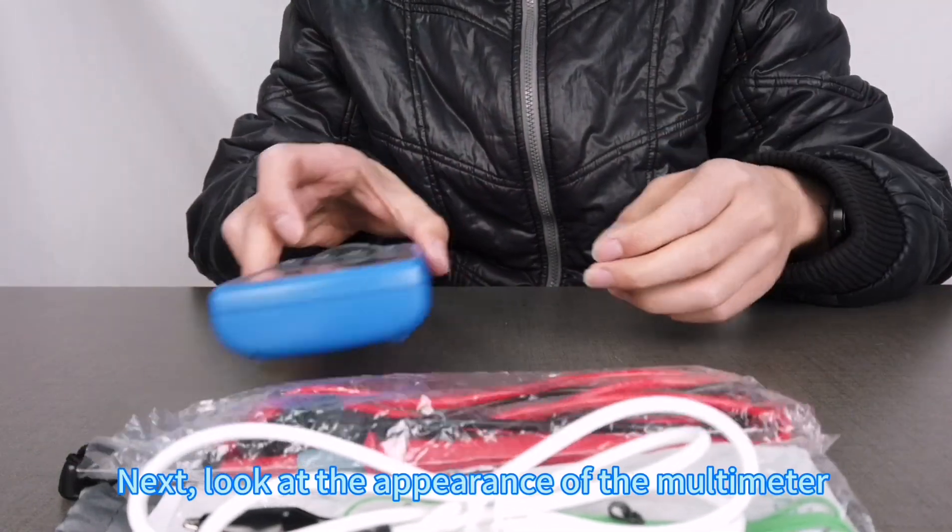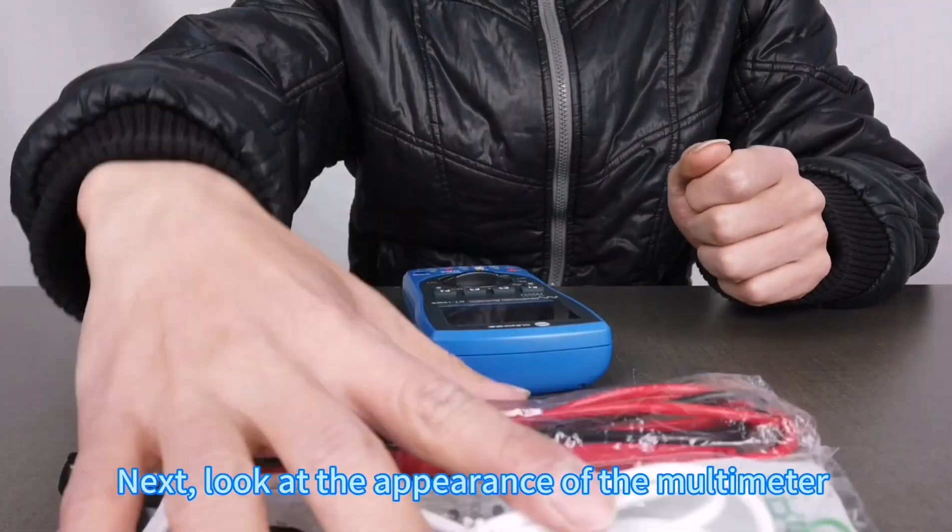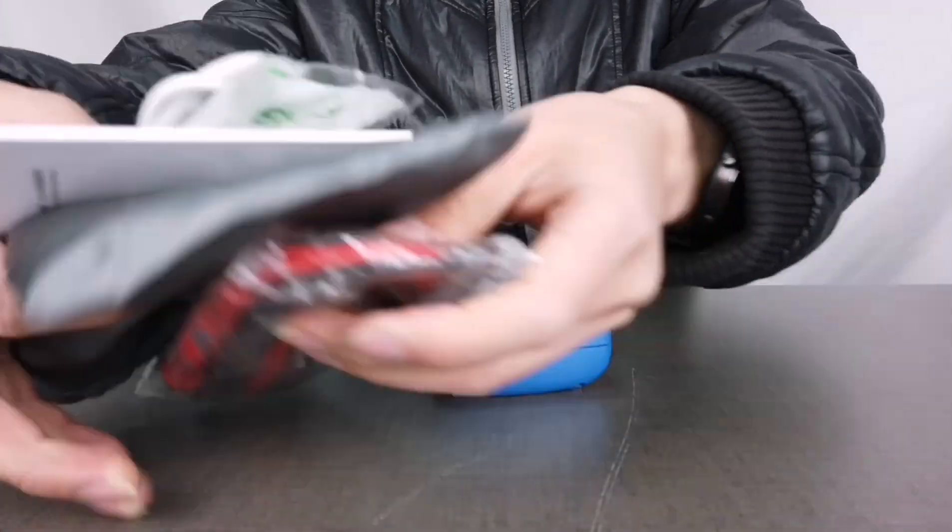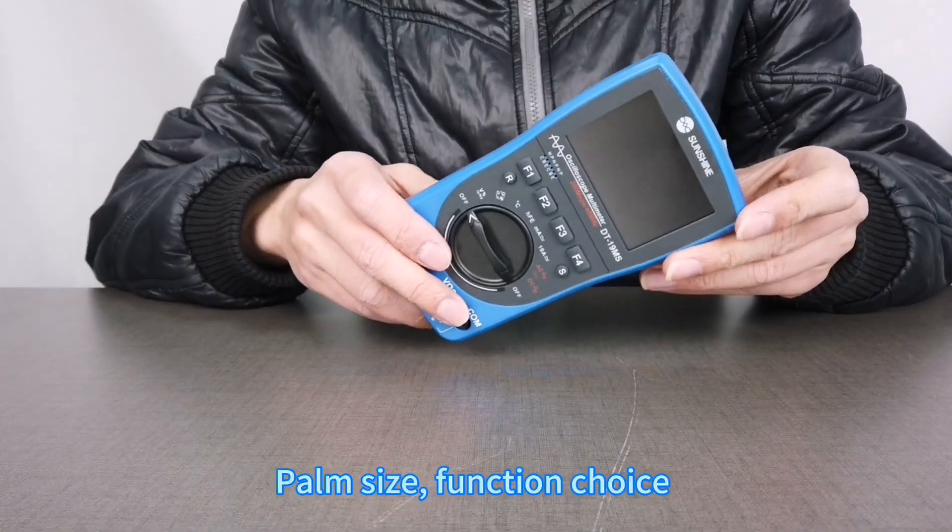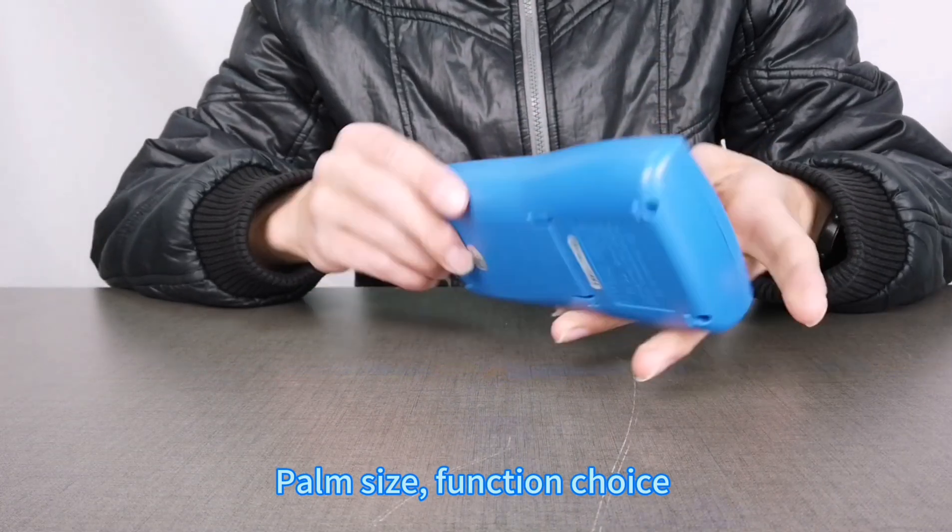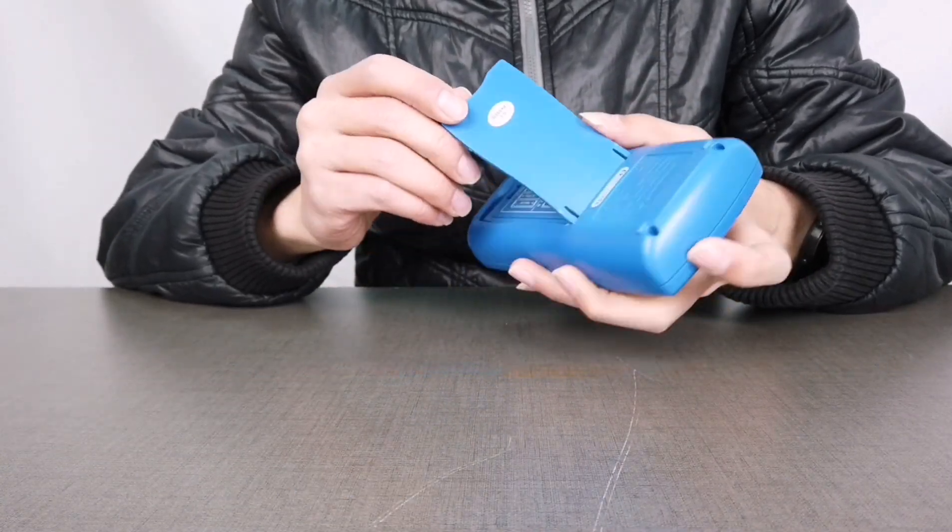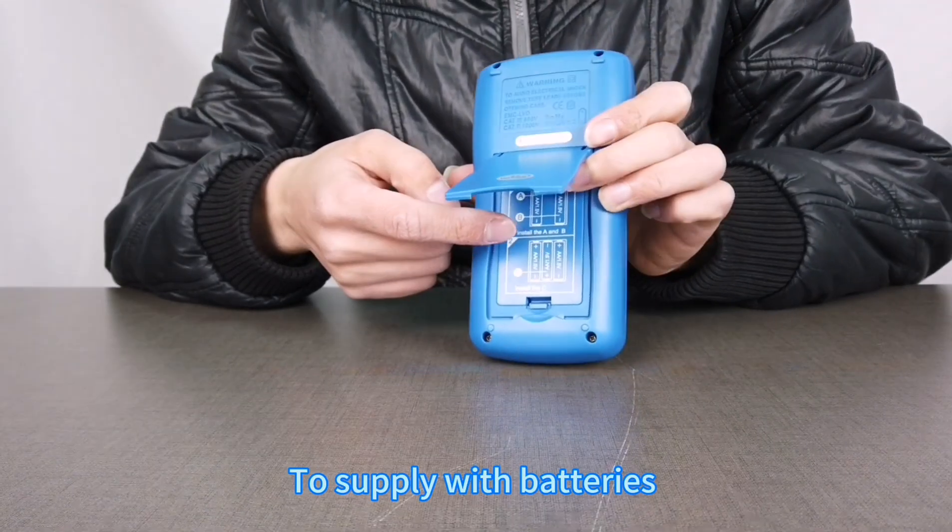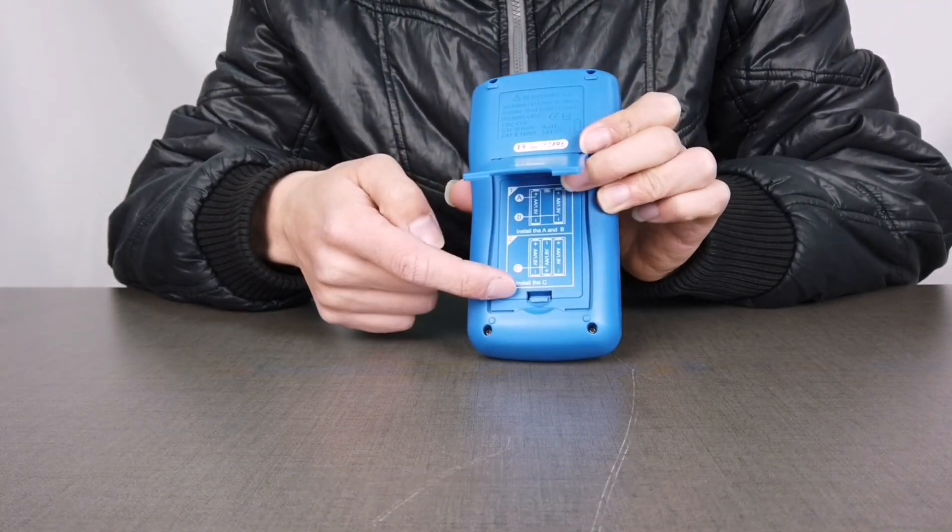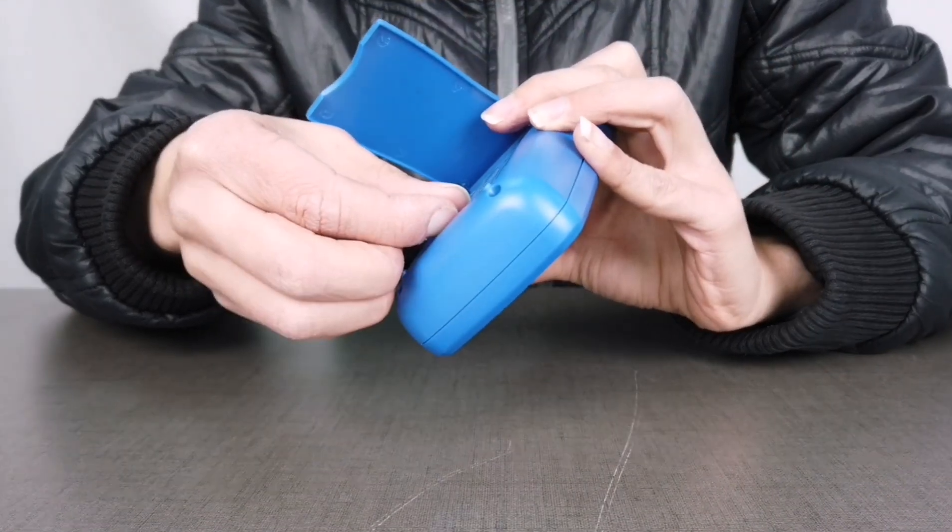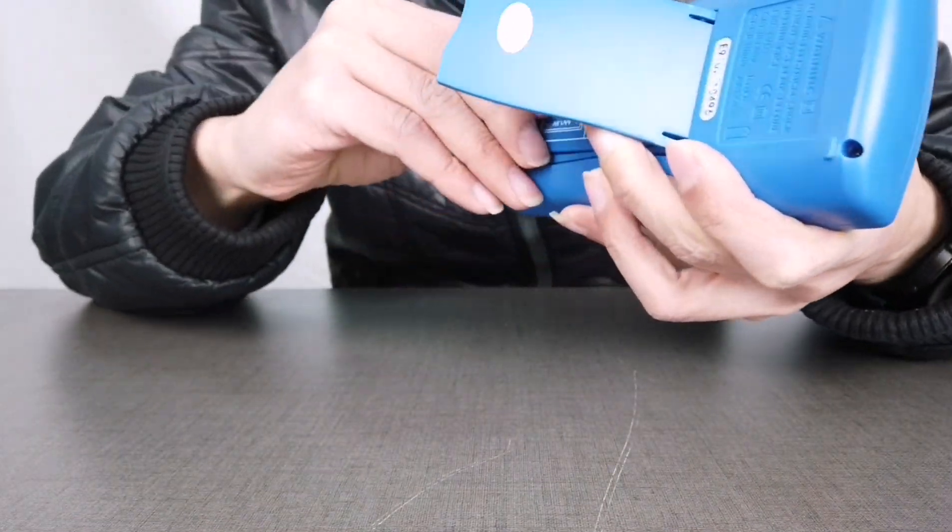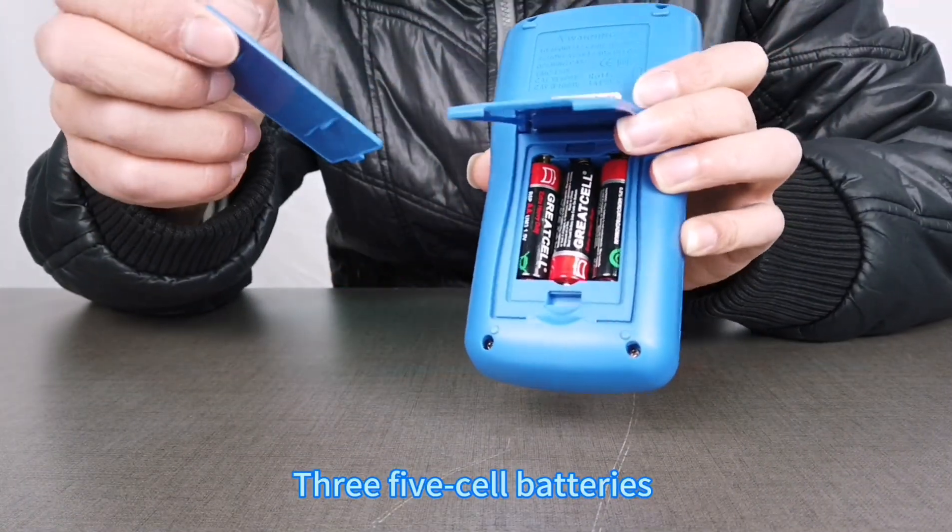Next, look at the appearance of the multimeter. It's palm-sized with a function selector dial and is powered by three five-cell batteries.